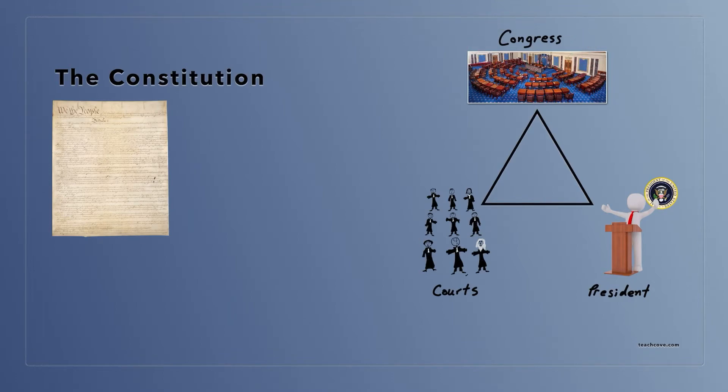So Congress was one branch. The president, or the executive branch, was another. And the courts is the third branch.